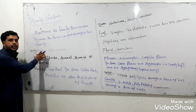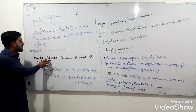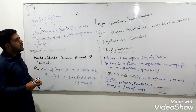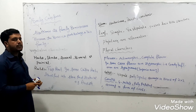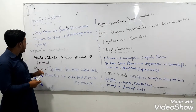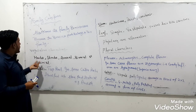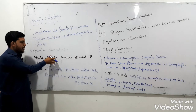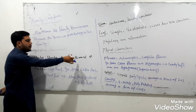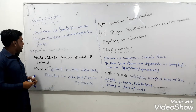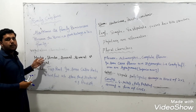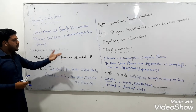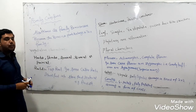Coming to the vegetative characters of family Brassicaceae — vegetative characters are those characters which are not related to reproduction. The members of this family are herbs, shrubs, annual, biennial, or perennial. Many plants belonging to this family may be herbs, shrubs, annual, biennial, or perennial.